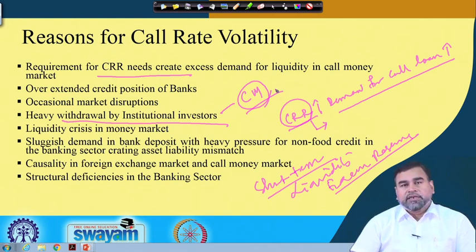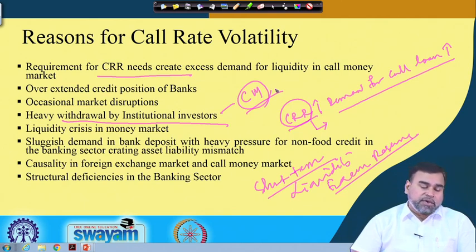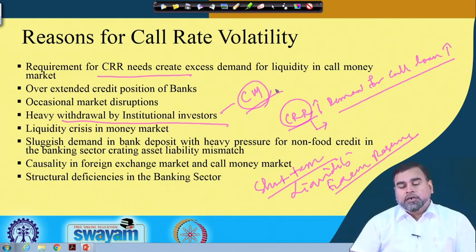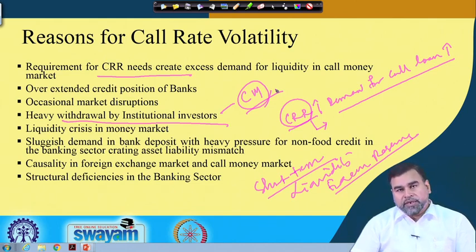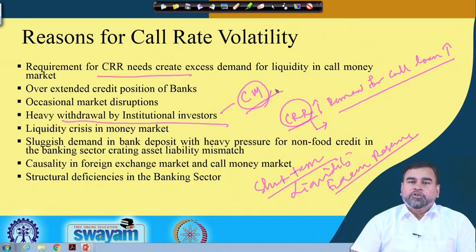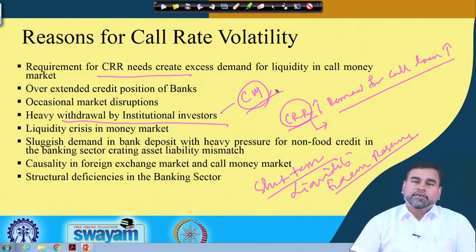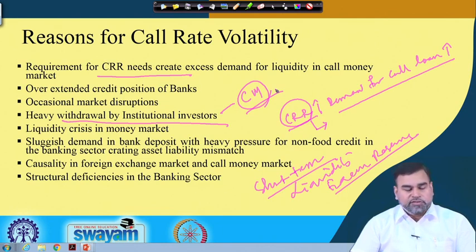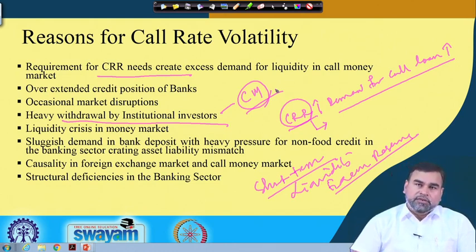Structural deficiencies in the banking sector are another factor. If any structural deficiency occurs, commercial banks borrow from the call money market — a market exclusively relevant to banks — to fulfill that deficiency. These are the major factors affecting demand and supply of call loans, which in turn make call money rates volatile. In some years the average call money rate was even 80%, as in 2007.